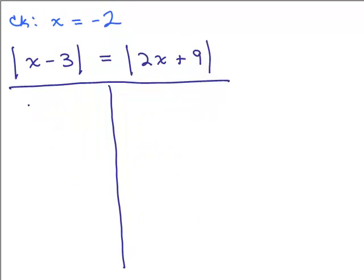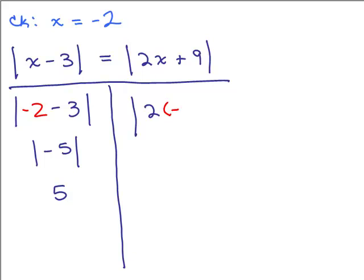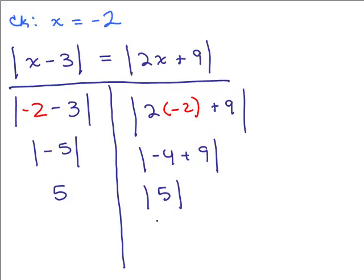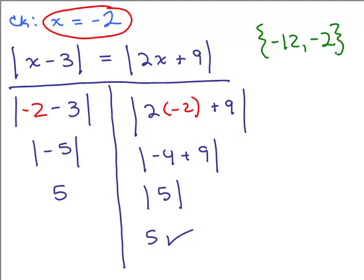Let's check x equals negative 2. We put in negative 2 for x and simplify inside the absolute value — it's negative 5, and the absolute value of negative 5 is 5. On the right-hand side, putting in negative 2 gives us negative 4 plus 9 inside the absolute value, which is the absolute value of 5, and that's 5. So negative 2 is also a solution. The final answer is both negative 12 and negative 2.